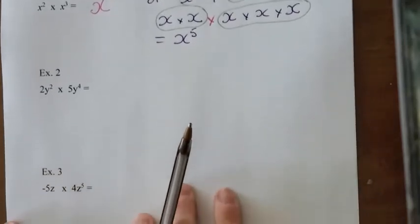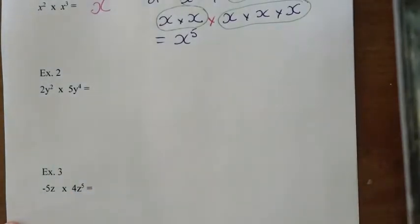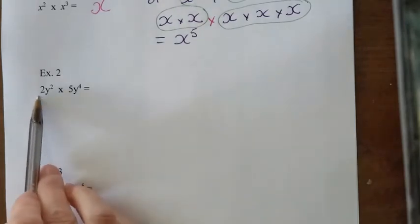All right, so I'm just going to move this up. And we're going to try this example here. So now we have coefficients or numbers out in front of the letters. So when we have that...